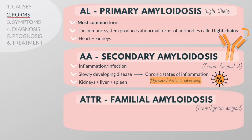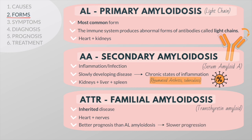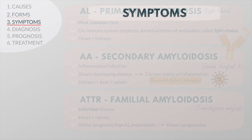Familial amyloidosis is an inherited disease where the body makes a mutant form of a protein called transthyretin. While everyone produces transthyretin, the mutated form is more likely to form into amyloid fibrils. This type most commonly affects the heart and nerves. The prognosis is better than for primary amyloidosis, because familial amyloidosis usually progresses at a slower rate.